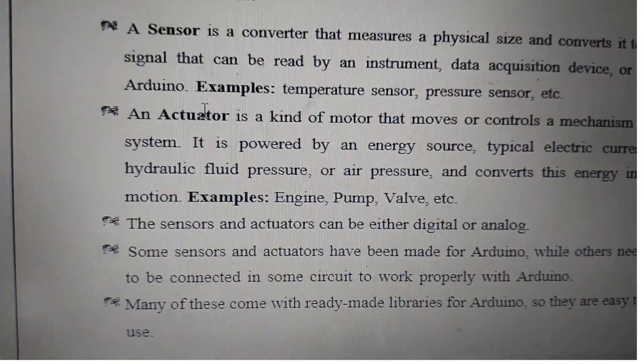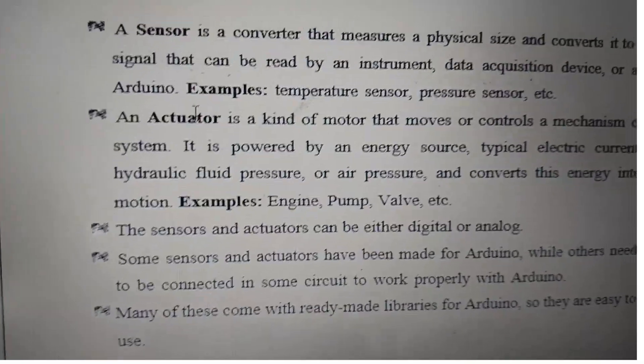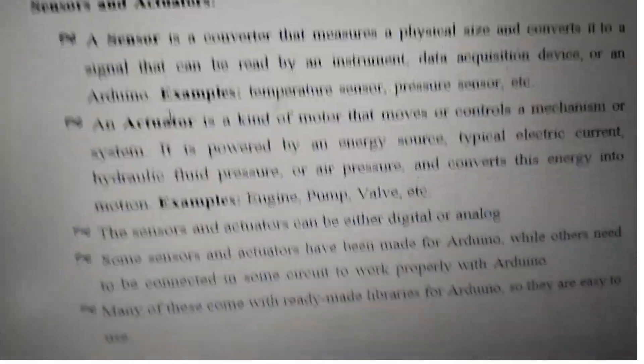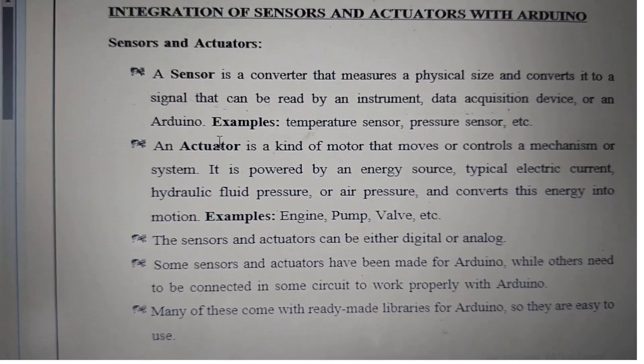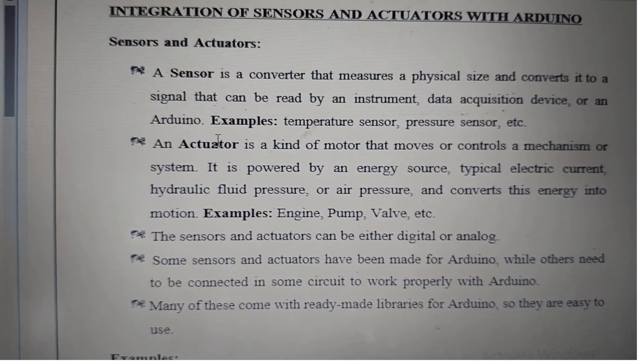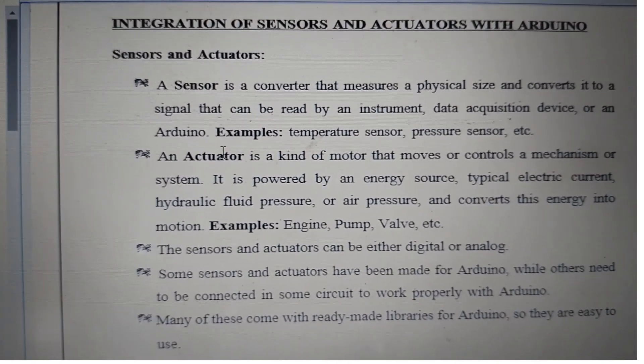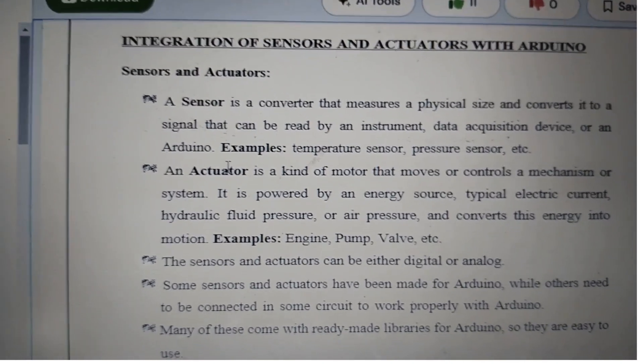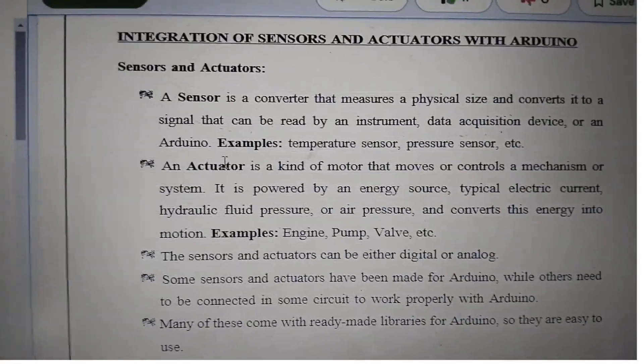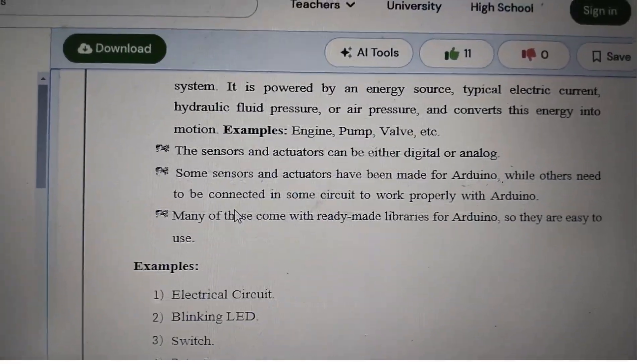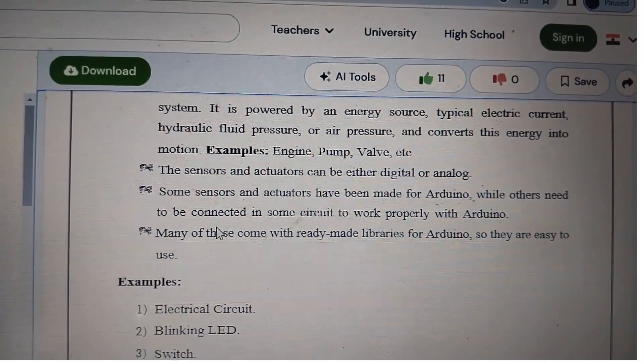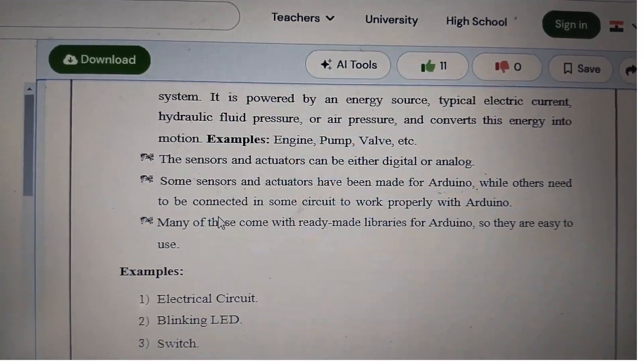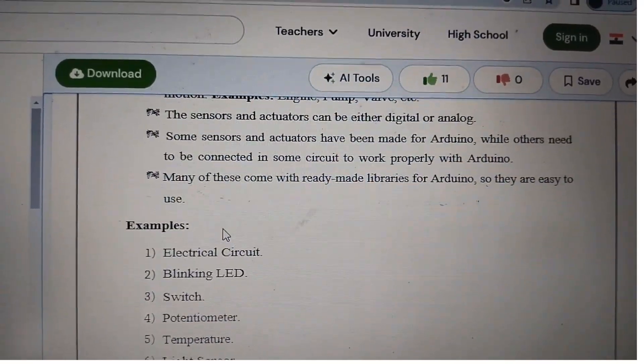Examples include engines, pumps, and valves. When the engine runs, the wheel rotates - that is an actuator. Sensors and actuators can be either digital or analog. Some sensors and actuators have been made specifically for Arduino, while others need to be connected in circuits to work properly with Arduino.